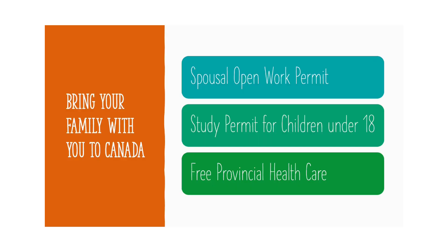Note that business immigration is also family immigration. When the investor applies for a work permit, the spouse gets an open work permit with which he or she can work for any employer in Canada. Kids under 18 get their study permits and get to study for free in Canada. The whole family is also covered under the provincial healthcare program, which is quite amazing — all of this even before they get their PR status.